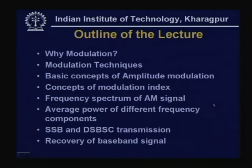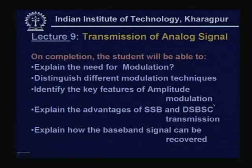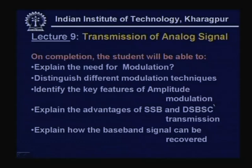Then we shall consider the frequency spectrum of the AM signal and the average power of different frequency components. We shall also consider special situations like single sideband (SSB) and DSBSC (double sideband suppressed carrier) transmission. Finally, we shall discuss the recovery of the baseband signal. After attending this lecture, students will be able to explain the need for modulation, distinguish between modulation techniques, identify key features of amplitude modulation, and explain the advantages of SSB and DSBSC transmission, as well as how the baseband signal can be recovered.